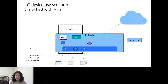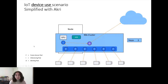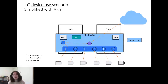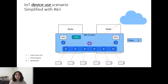As the environment changes — say you add cameras — Akri will discover them and immediately deploy frame servers. Say you add a node, Akri will detect the new GPU and immediately deploy another inferencing pod. The environment can continue to change, but we only need those original three steps. This really illustrates how Akri can simplify device use on the edge.